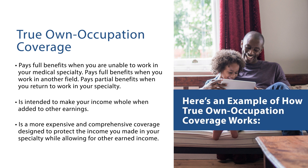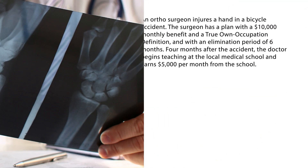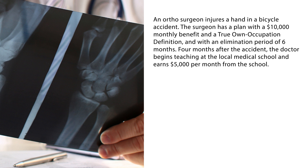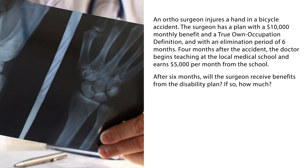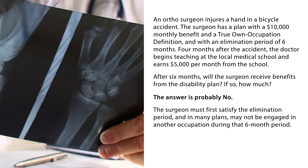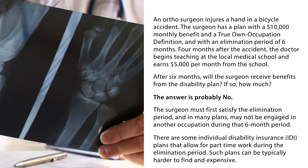Here's an example of how true Own Occupation coverage works. An ortho surgeon injures a hand in a bicycle accident. The surgeon has a plan with a $10,000 monthly benefit and a true Own Occupation definition, with an elimination period of six months. Four months after the accident, the doctor begins teaching at a local medical school and earns $5,000 per month. After six months, will the surgeon receive benefits? The answer is probably no — the surgeon must first satisfy the elimination period, and in many plans may not be engaged in another occupation during that six-month period. There are some Individual Disability Insurance plans that allow for part-time work during the elimination period, but such plans can be typically hard to find and expensive.